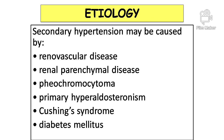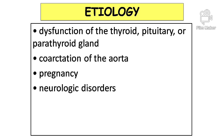Causes of secondary hypertension are renal vascular disease, renal parenchymal disease, pheochromocytoma, primary hyperaldosteronism, Cushing's syndrome, and diabetes mellitus. Also, endocrine gland dysfunction, pregnancy, and neurologic disorders.